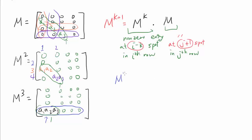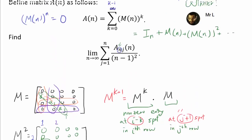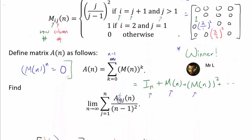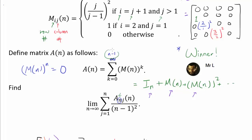Our lemma shows that in M to the 4th, a non-zero entry requires i equals j plus 4, meaning i is at least 5 — but our matrix is 4 by 4, so this is impossible. Thus M to the 4th is the zero matrix. More generally, for an N by N matrix, M to the N-th power is the zero matrix, so A of N sums identity matrix, M of N, M of N squared, all the way to M of N to the N minus 1st power.